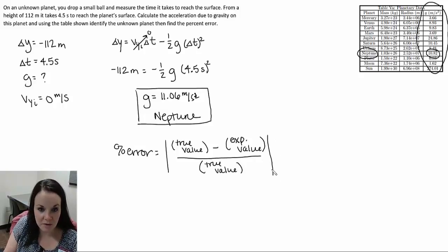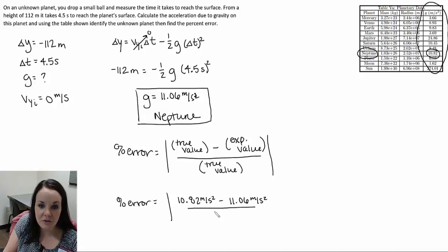We put it in absolute value signs, meaning whatever we get, positive or negative, we make it positive. When I plug this in, my percent error is the true value of 10.82 meters per second squared minus our experimental value, which we just calculated, divided by the true value again, 10.82 meters per second squared.